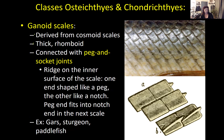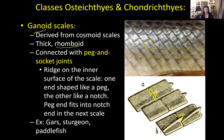Next are ganoid scales, derived probably from cosmoid scales. They're very thick and have that rhomboid shape. The difference between rhomboid-shaped cosmoid scales and rhomboid-shaped ganoid scales is that in ganoid scales each rhombus is connected with peg and socket joints — there is an extension of the scale that fits into an indentation on its neighbor, which is how they hold together. You see this in gars, sturgeon, and paddlefish.